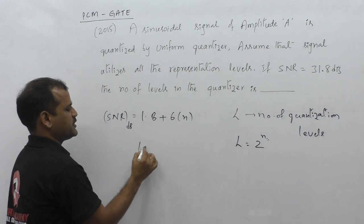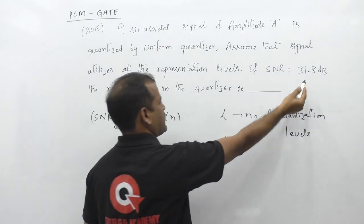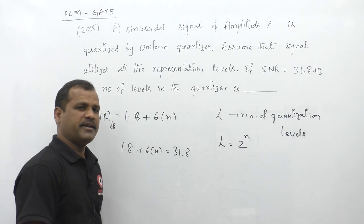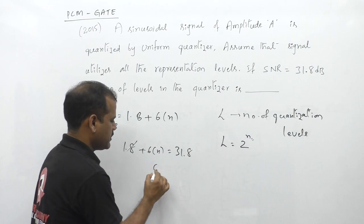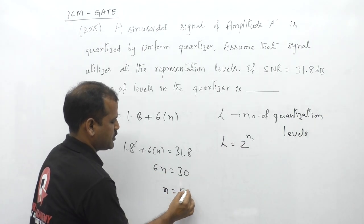Setting this expression equal to the given value, 1.8 plus 6N equals 31.8 decibels. Solving this, 6N equals 30, so N equals 5.